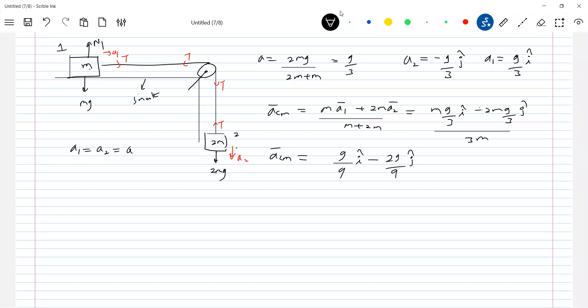Now what is the net external force acting on system? Yes, I have formula. Net mass of system, m plus 2m into a cm. So this will be 3m. What is the first step? It is 2g by 3.